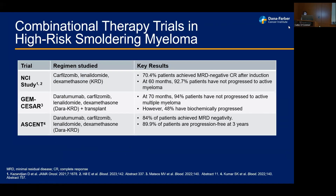More recently, the question has been whether combinational therapies used in active myeloma can be brought earlier into the high-risk smoldering myeloma population. A few notable trials include the NCI study and the SENT study looking at the combination of carfilzomib, lenalidomide, and dexamethasone (KRd), or with daratumumab as a four-drug regimen, as well as the Spanish GEM-CESAR study looking at daratumumab plus transplant — all regimens used in newly diagnosed myeloma patients.